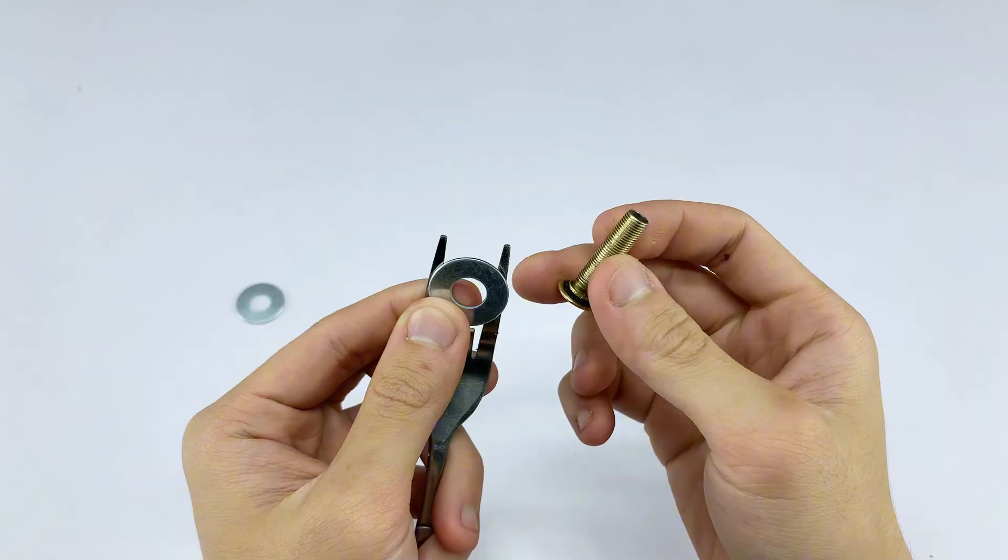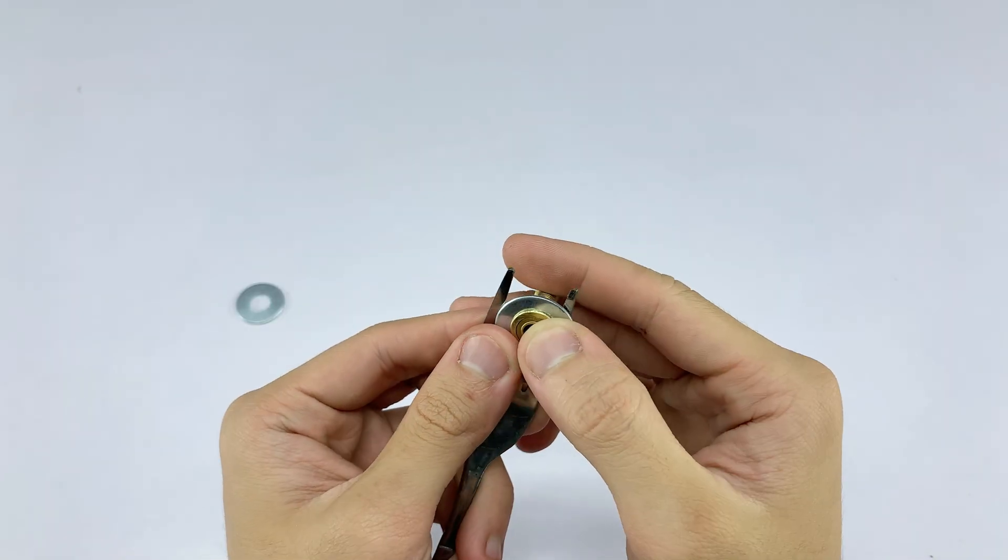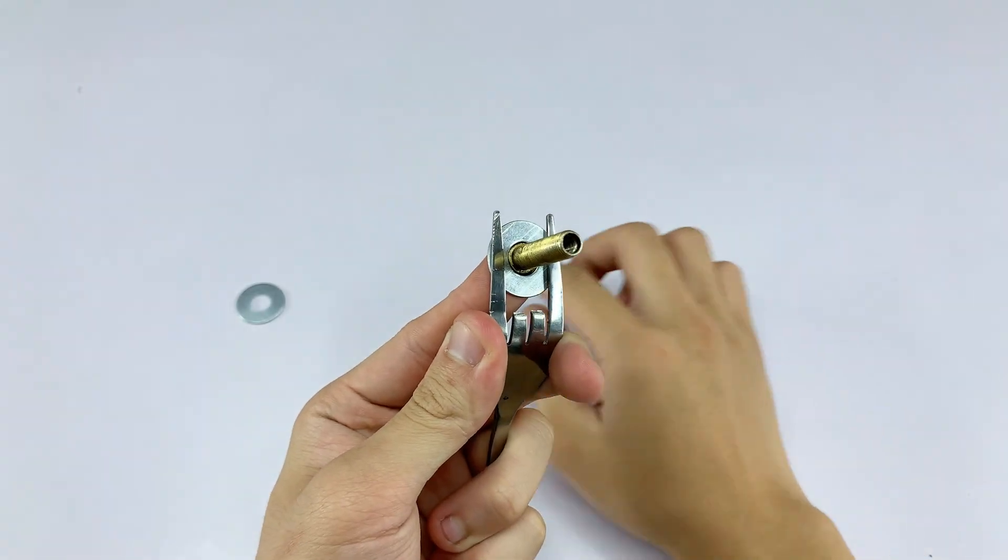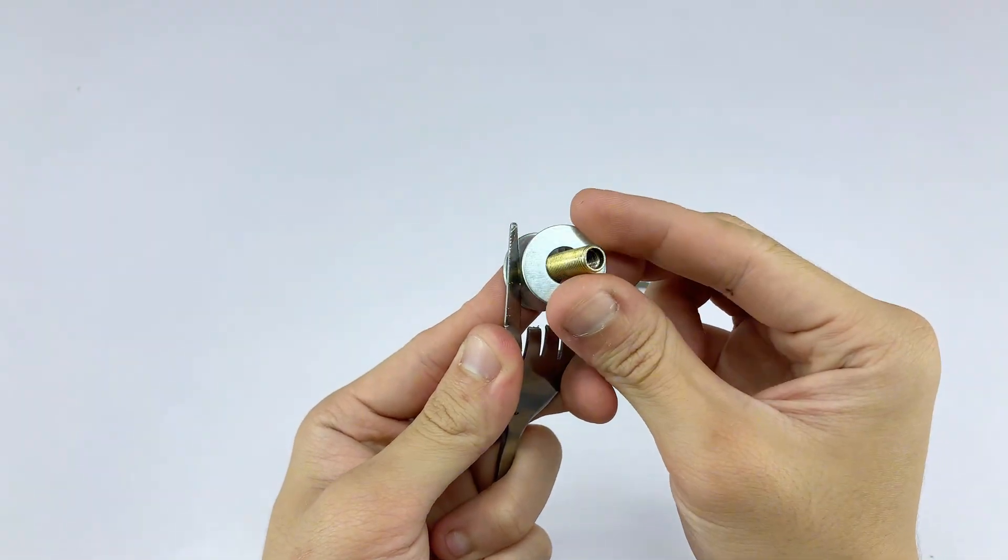I'm inserting the main body of the tire valve stem between the middle tines of the fork, making sure the washers are on either side. This will be the housing for our heating element.